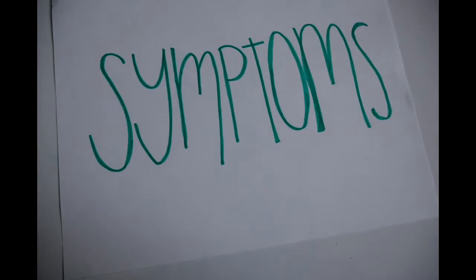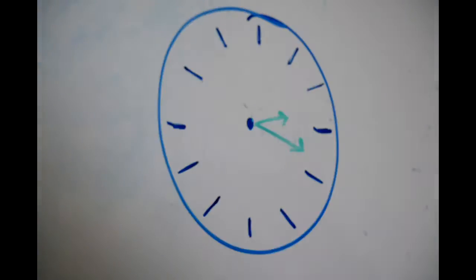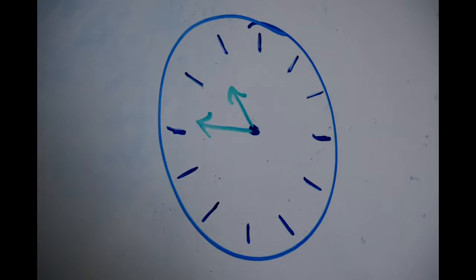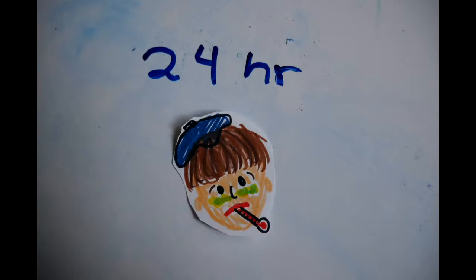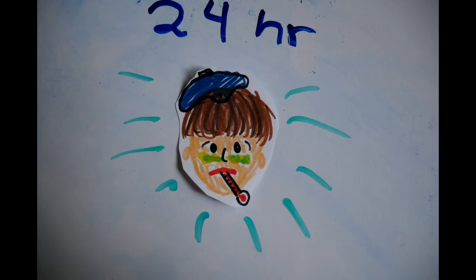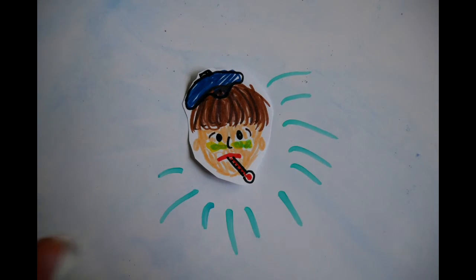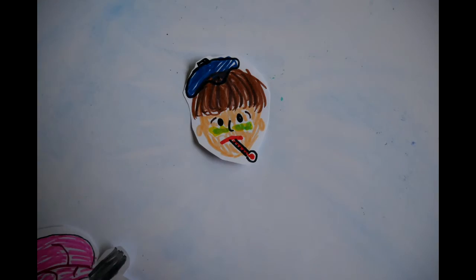The time sequence and symptoms of anthrax vary depending on its forms, but symptoms can take anywhere from one day to more than two months to appear. For example, within the first 24 hours of contact with inhalation anthrax, the infection presents flu-like symptoms such as fever and uncontrollable coughing.